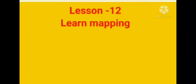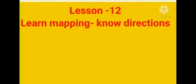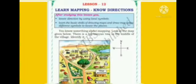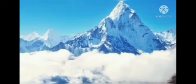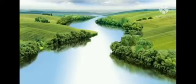Hello children, welcome to VVS class. Today we are learning lesson number 12: learning maps and knowing directions. Why are directions important? What is the meaning of mapping? Mapping means making a map. Why do we need maps? The uses of maps include understanding roads, directions, railways, mountains, and rivers. For everything, we need a map.